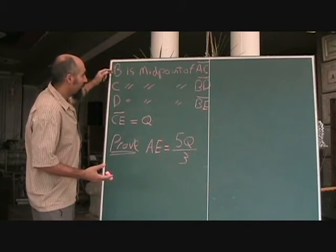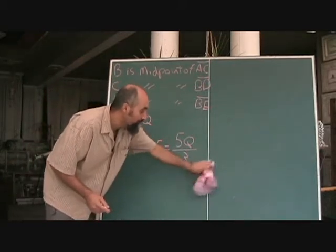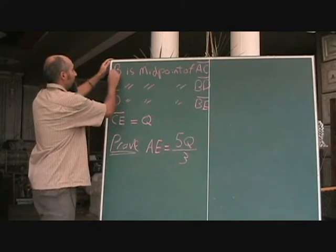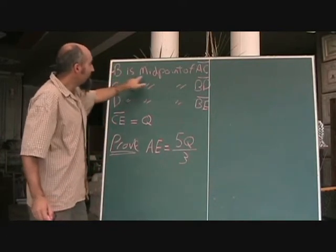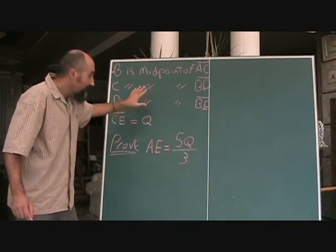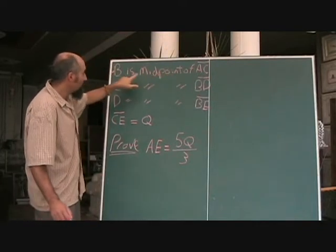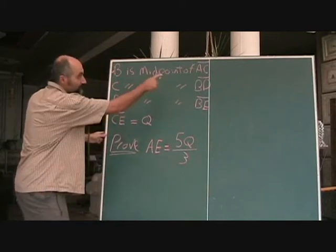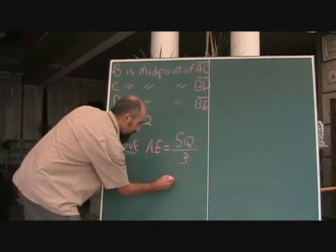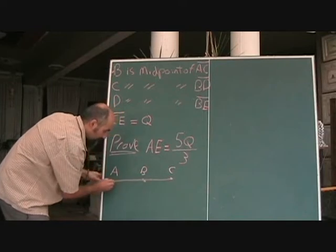Then you go back, take each point one at a time, and draw the diagram. So let's start with the first point: B is the midpoint of AC. We draw line AC and place B right in the middle.